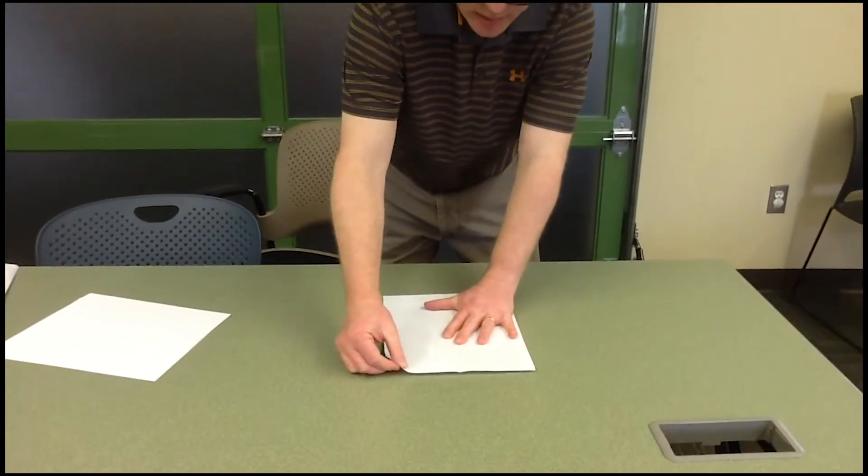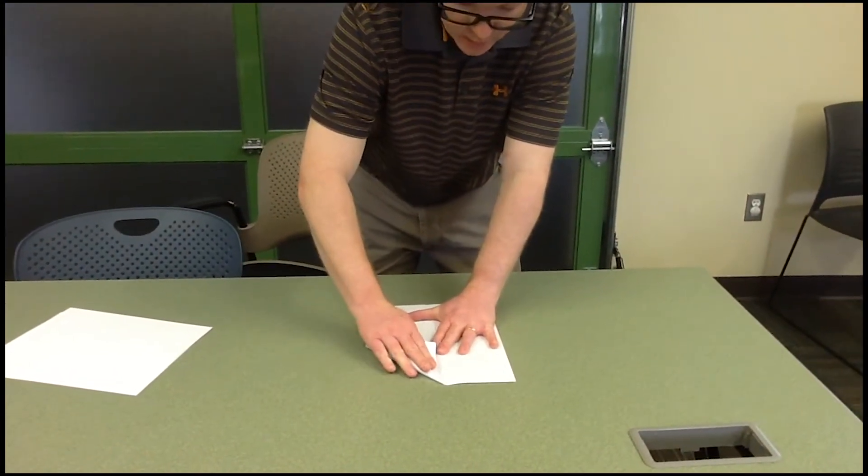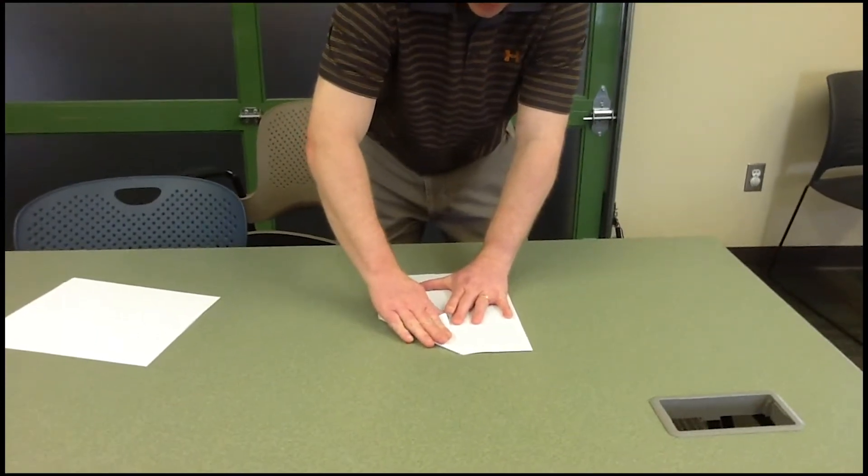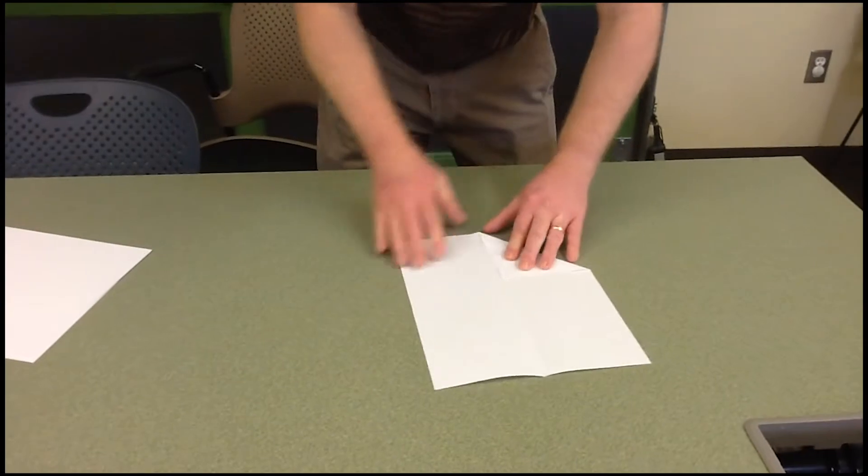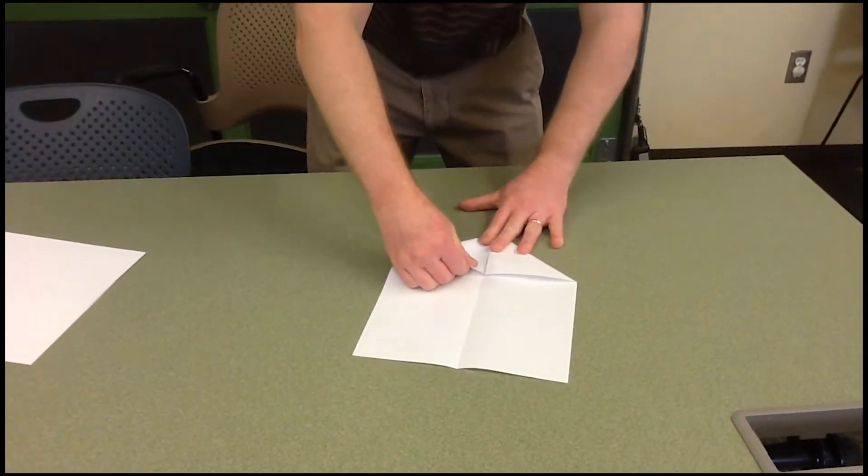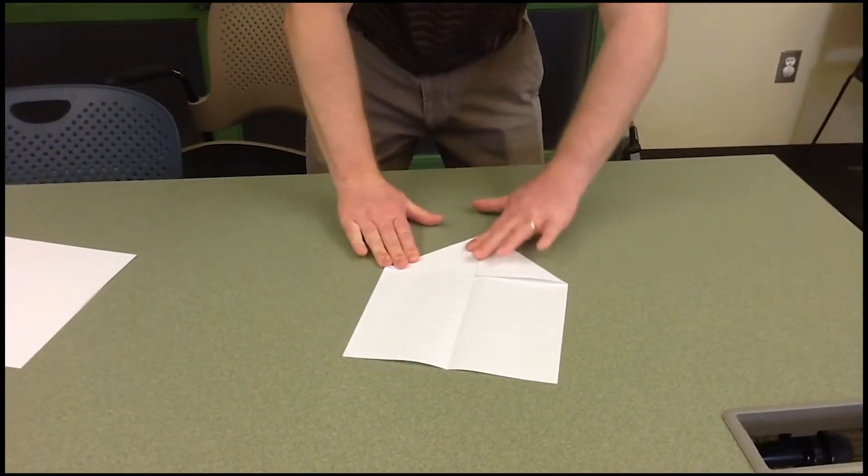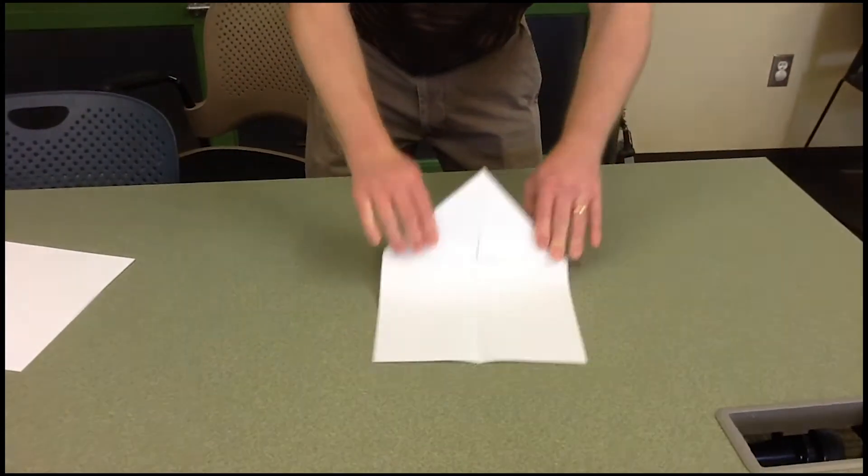I'm going to take the top corner again, fold it over to the middle line. I like to spin it, fold it over again. And again we have the house.